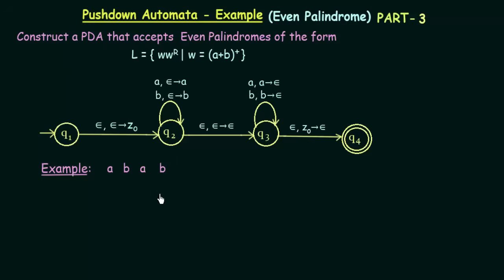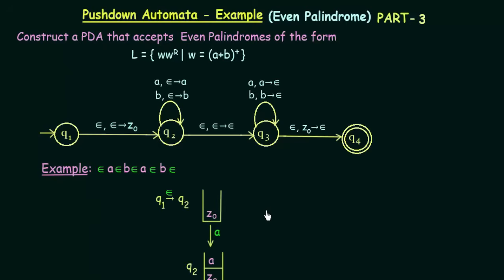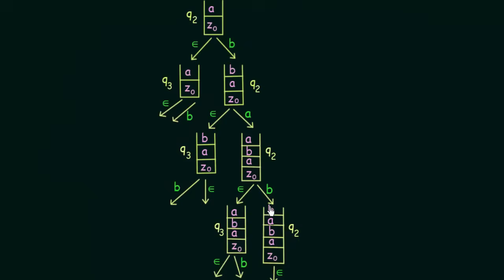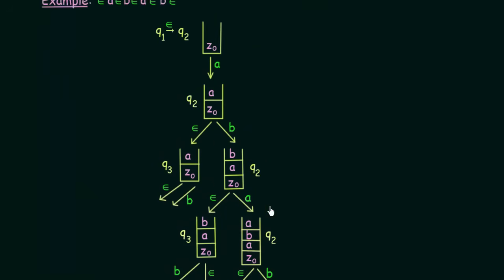Let's see how the pushdown automata works with this string. First, we have to assume that there are epsilons on each and every side of every symbol. Once we have the epsilons placed as shown, we can proceed by passing this string to the pushdown automata. Here I have drawn the stack diagram for this problem, and I will be explaining it step by step.